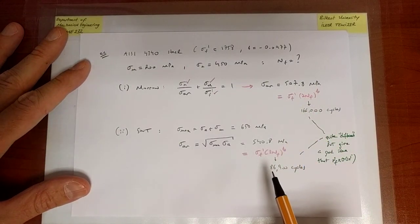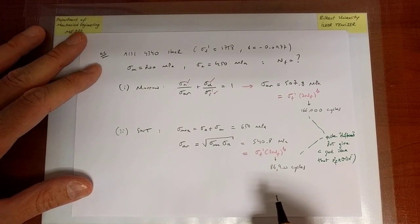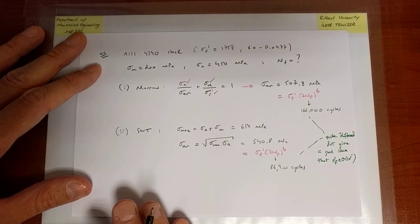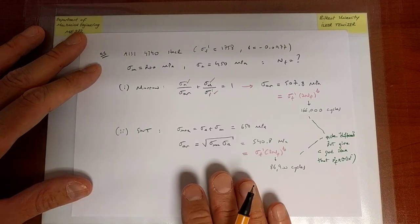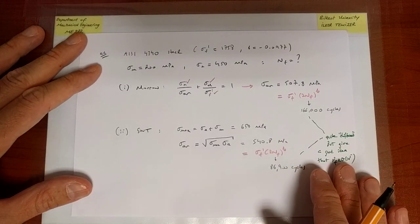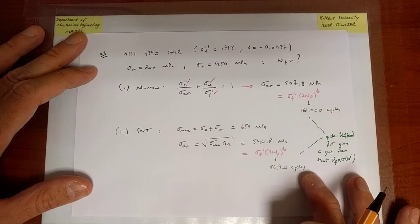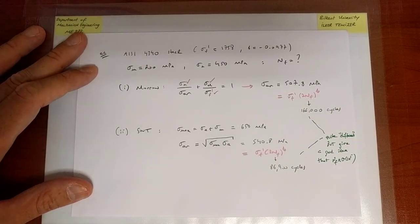So one would say eventually that these two models, although they are quite different, they give both a reasonable estimate such that such a complex phenomena is actually predicted to an accuracy that is reasonably close with respect to at least one another.